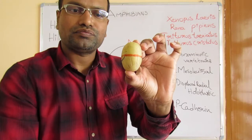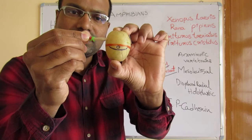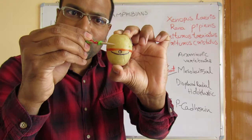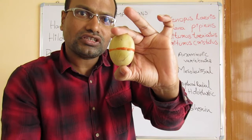The third cleavage is displaced away from the equatorial region towards the animal pole, because there is a lot of yolk present in the vegetal region which does not allow cleavage to occur there. So the third cleavage is slightly above the equator. This is how the initial three cleavages occur.